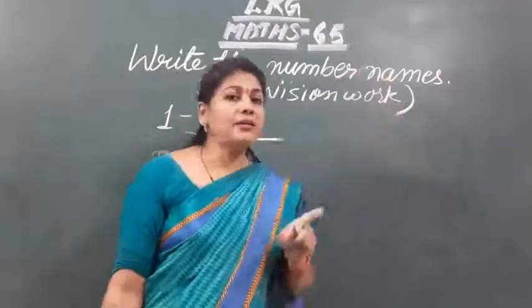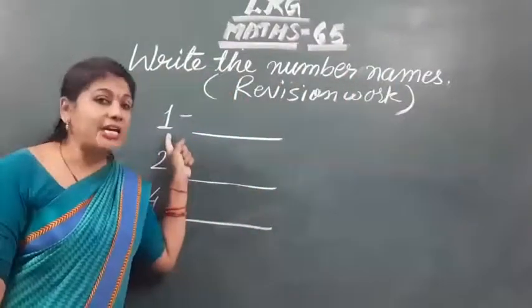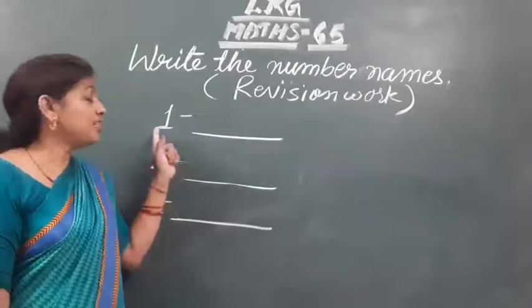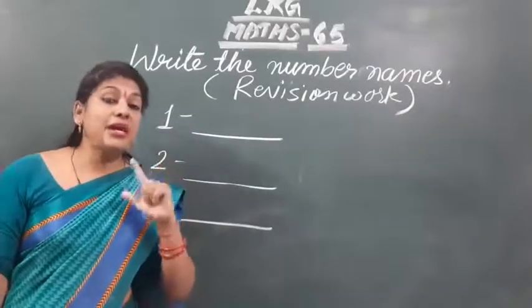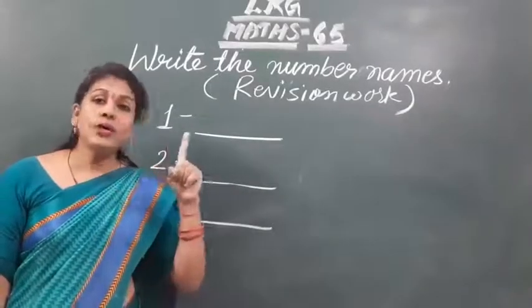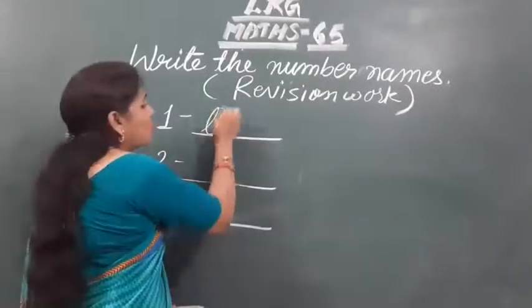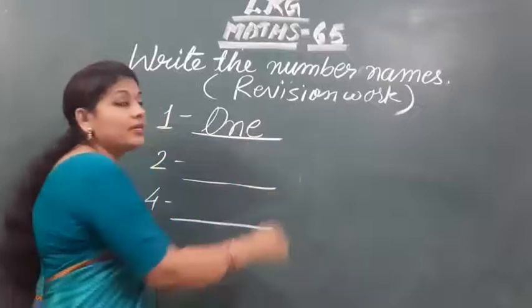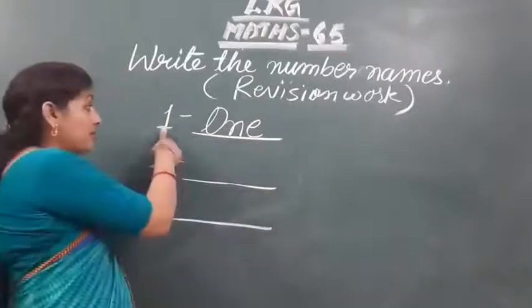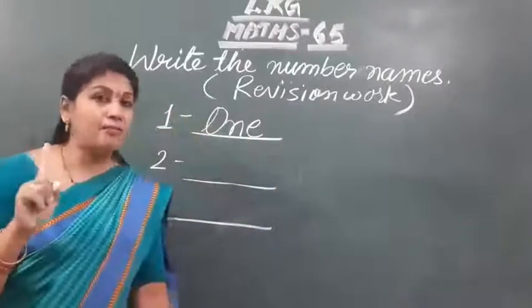How to write that? It is one. First identify the number. It is one. Then what is the spelling of one? O-N-E. That is one. Then how to write? O-N-E. It is one. This is one. We have one number name.